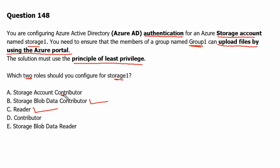Option A, Storage Account Contributor, is incorrect because it allows managing storage accounts but not accessing the data within them. Option D, Contributor, grants full access to manage all resources but does not allow assigning roles — this permission would be more than what we need, so we will not use the Contributor role. Option E, Storage Blob Data Reader, allows reading and listing Azure storage containers and blobs but will not allow uploading any file using the Azure portal, so this is not applicable.